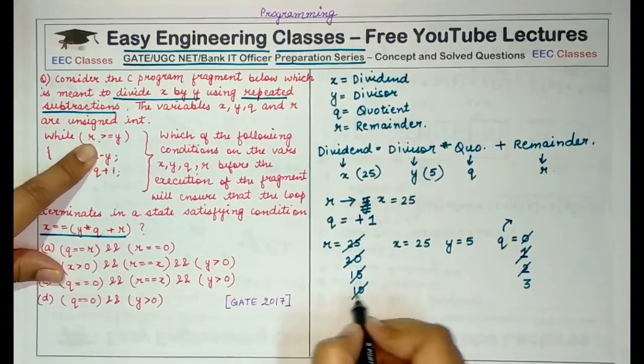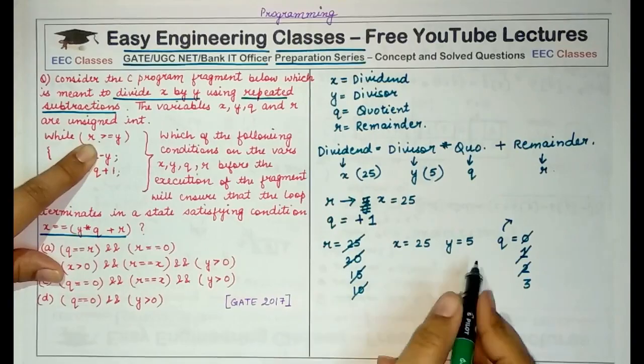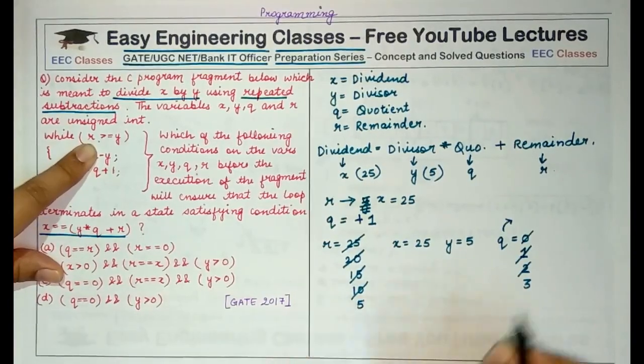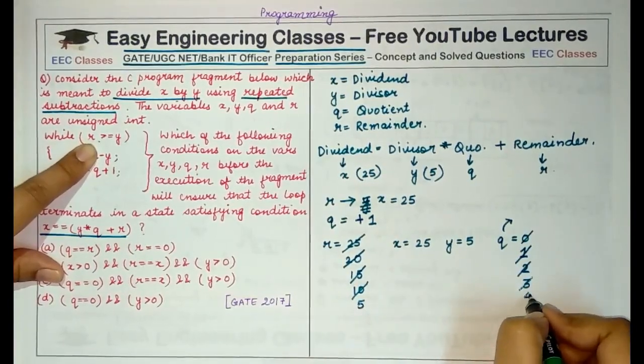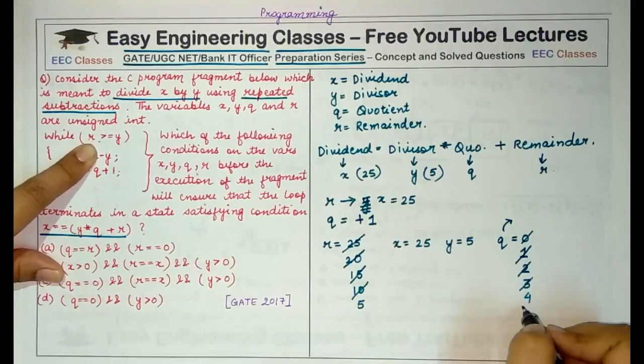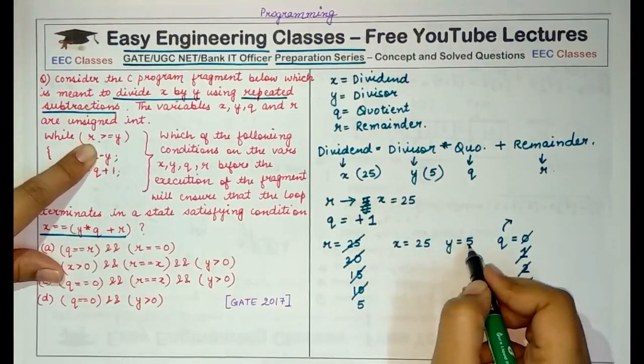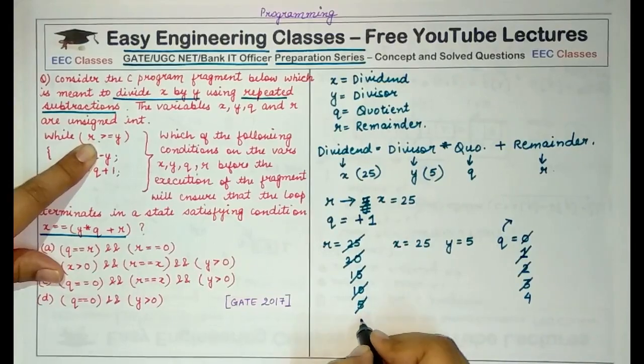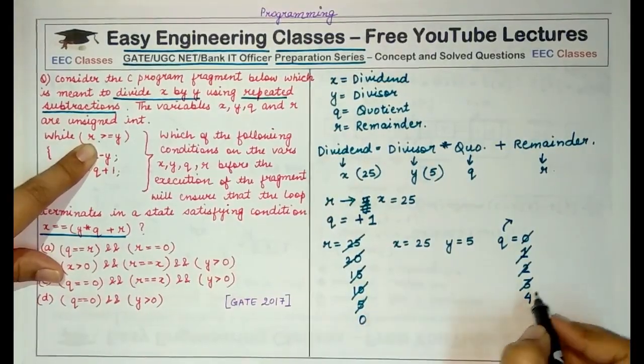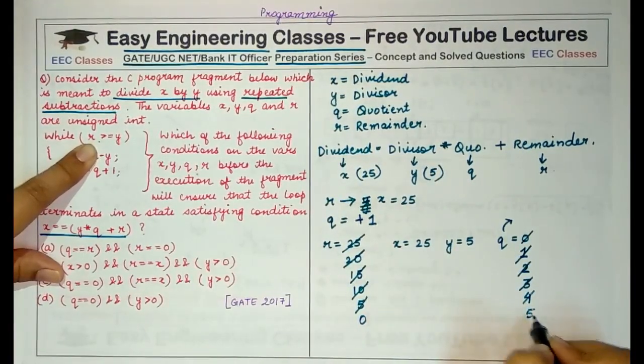Then 10 is greater than 5, again I decrement and here I increase the value of Q by 1. Now 5 is equal to 5, so still I will decrement this value and increment this value.